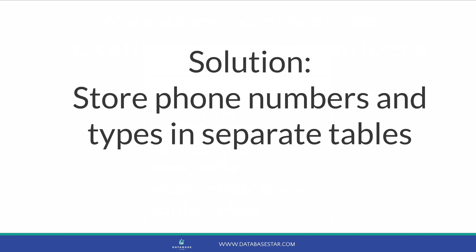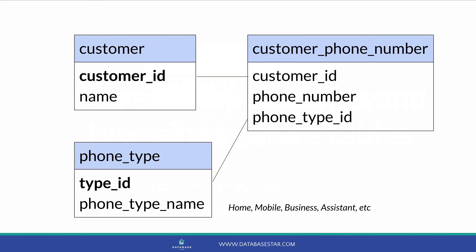A better solution is to store phone numbers and types in separate tables. You can have a table that stores customer phone numbers with a customer ID for each, allowing customers to have as many phone numbers as needed. You can also have a phone type table storing types such as mobile, business, home, or assistant. Each new type would be a new record in this table, linked to the phone number. This gives you the flexibility to store only the phone numbers you need and allows new types in the future.